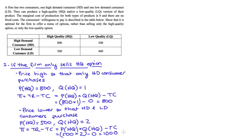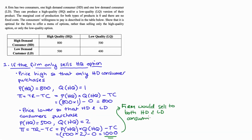From our workings, if the firm only sells the high quality option, they would choose to sell to both consumers because profit is higher that way — $1,000 is greater than $800. So $1,000 will be the profit if the firm only sold the high quality option.